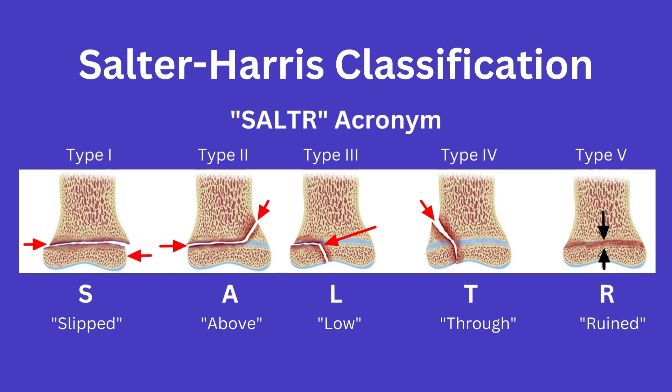A type 2 fracture, which is the above fracture, involves a fracture extending into the metaphysis and is the most common of all five. A type 3 fracture, which is the so-called low fracture, involves extension into the epiphysis below the growth plate.